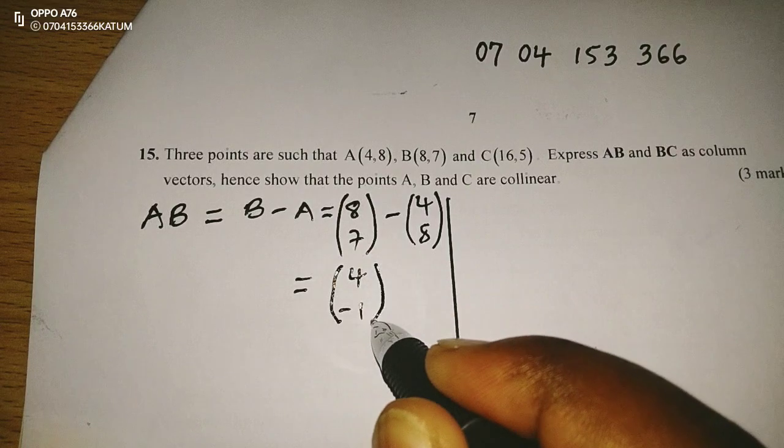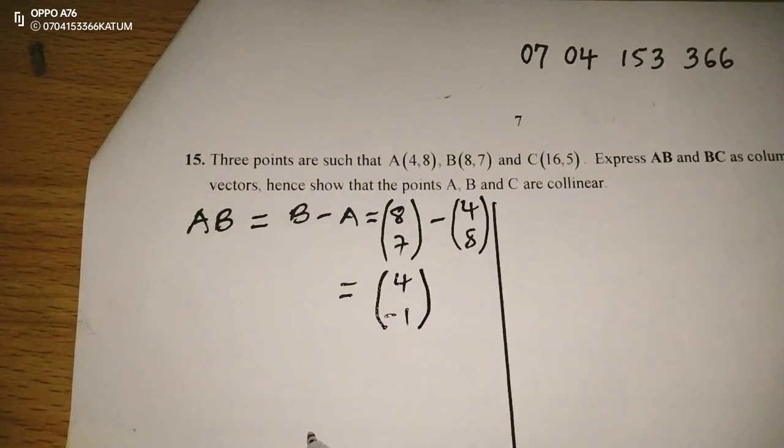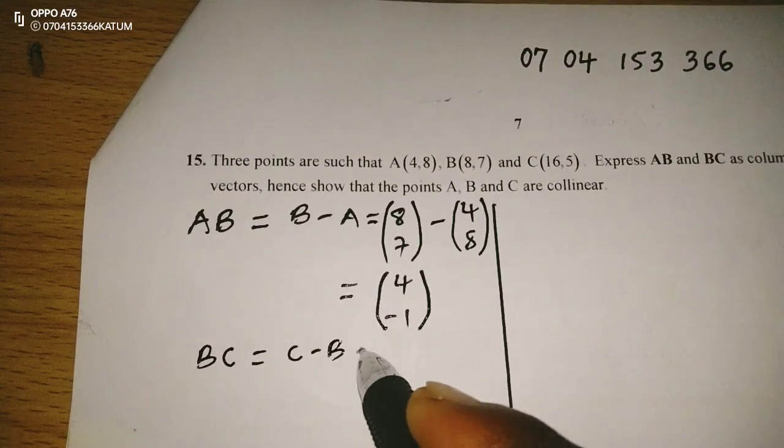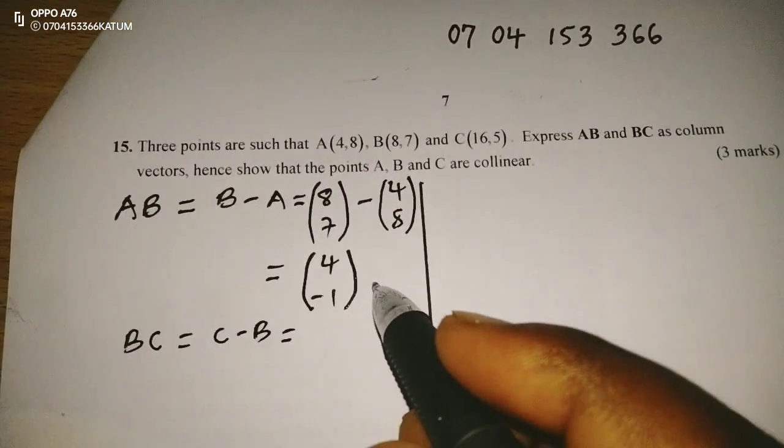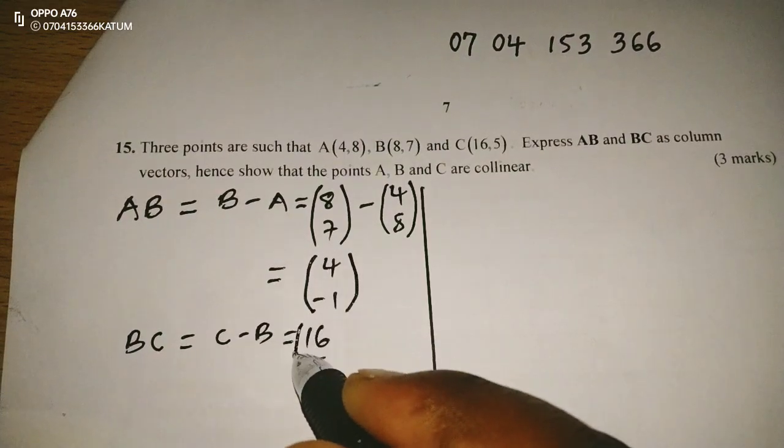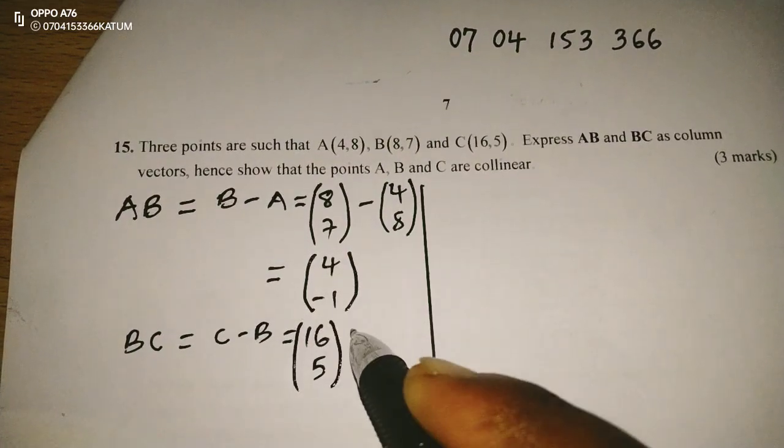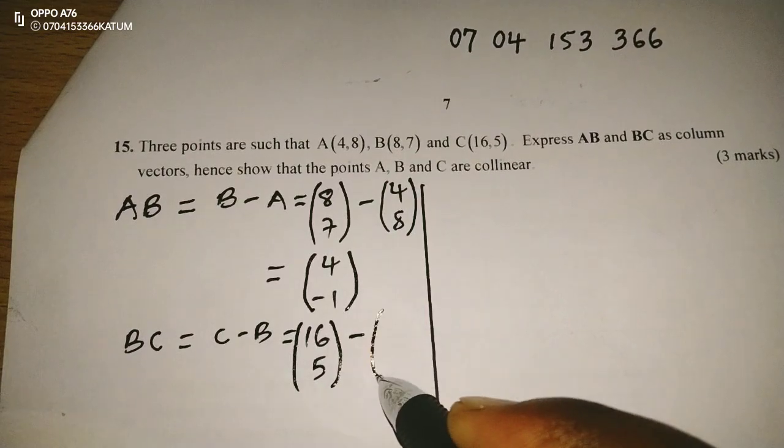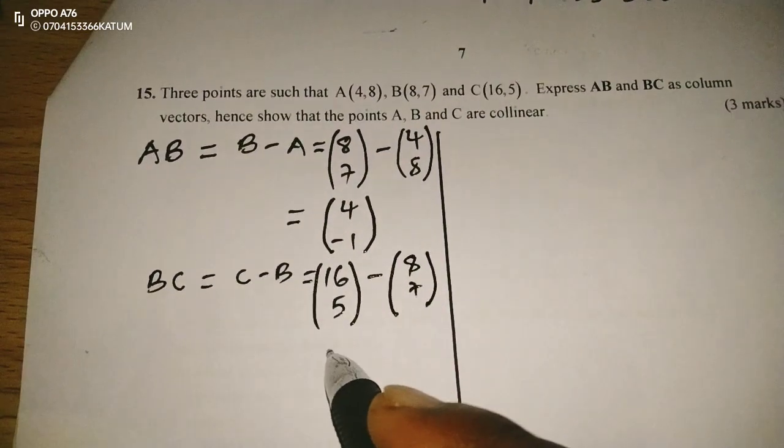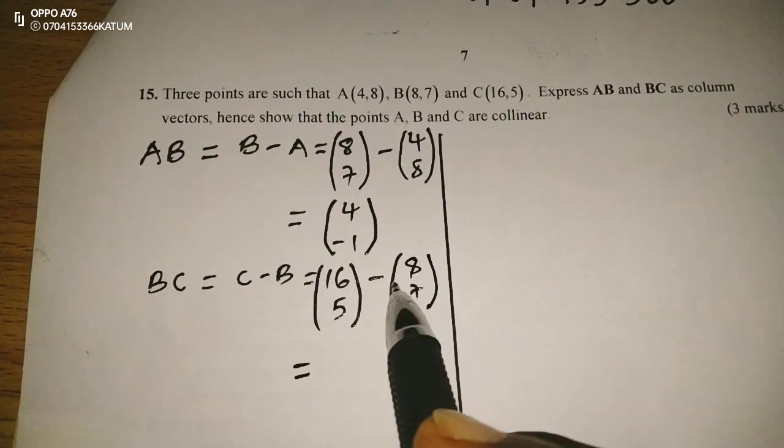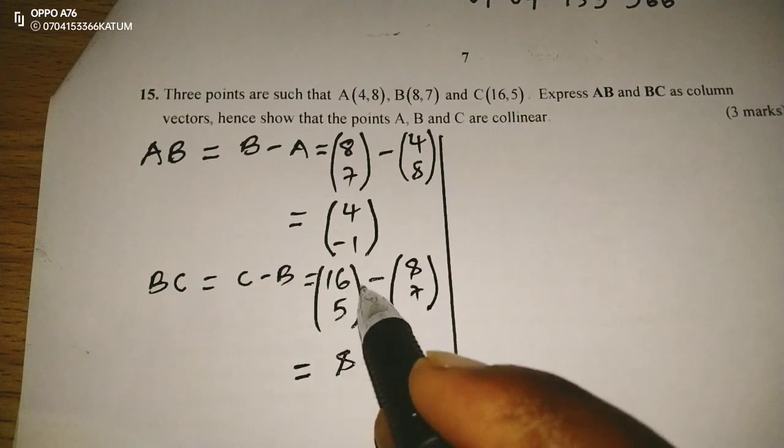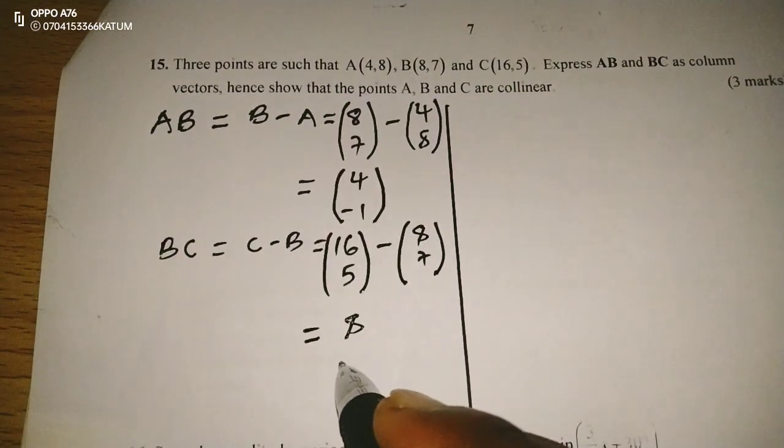So AB is (4, -1). The other one is going to be BC. I will take C minus B. So C is (16, 5), and B is (8, 7). This is going to give us (8, -2).